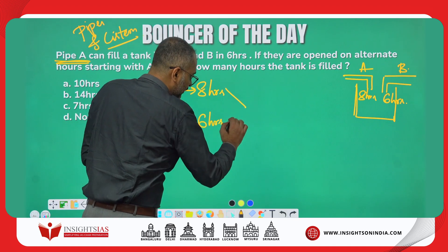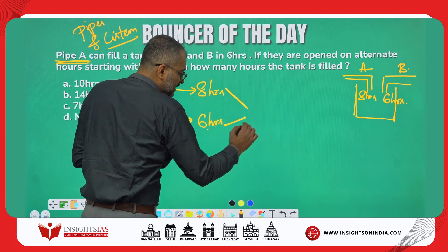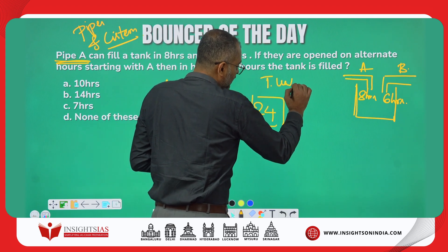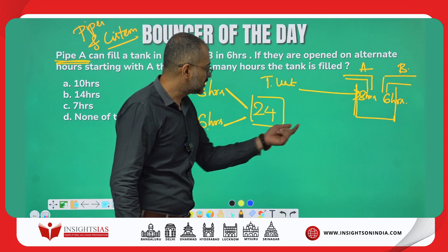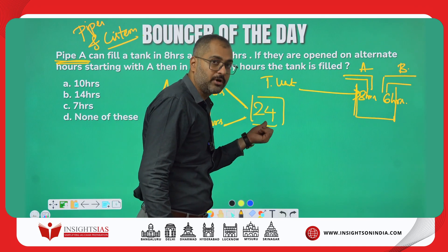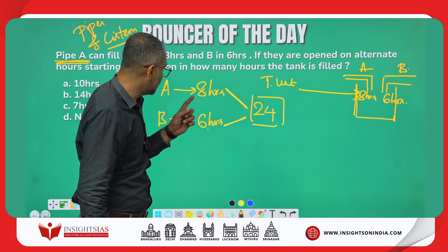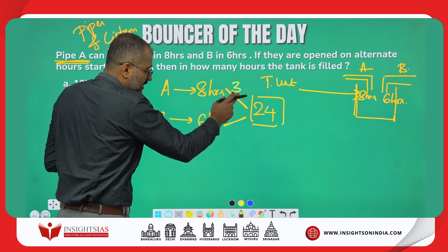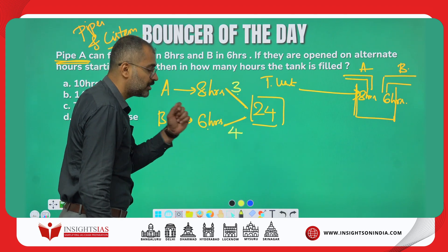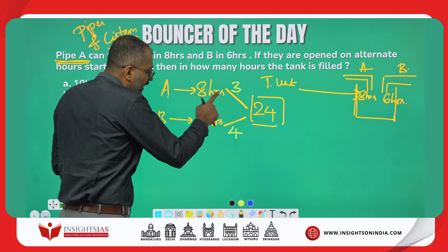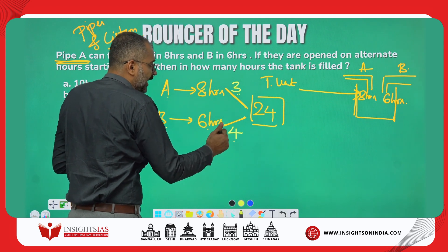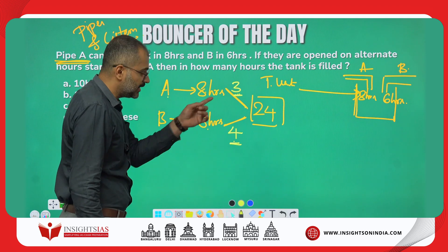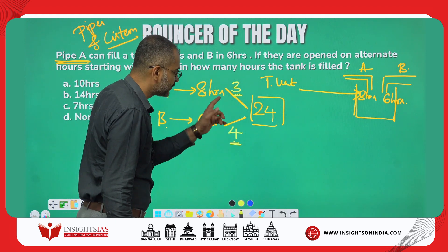How to solve this? You are very familiar — we take the LCM of 8 and 6, which is 24. This 24 represents the total units of the tank's capacity. Since 24 units are filled in 8 hours, every hour only 3 units are filled — this is called efficiency of A. Similarly, B fills 4 units per hour.